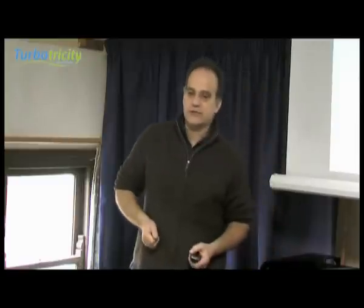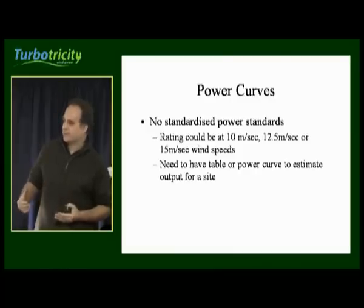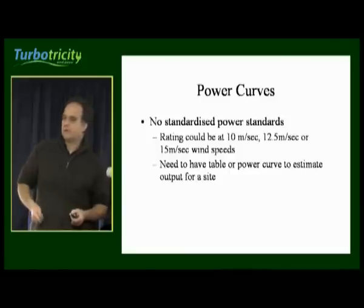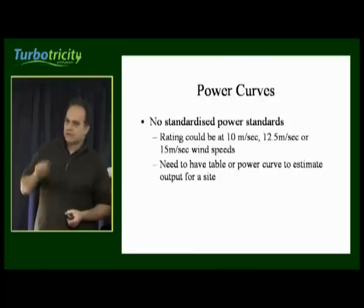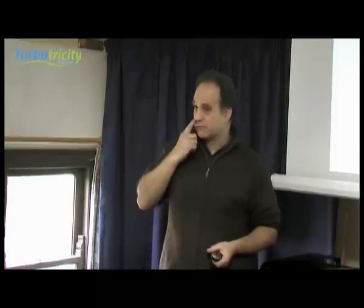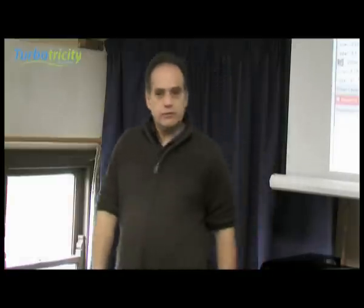Unfortunately, there's no standardisation around the wind speed at which people describe a turbine. So when somebody says this is a 5-kilowatt turbine, you need to know at what wind speed it's producing 5 kilowatts, and whether that's what the generator is producing or what you're getting out of the inverter. I would ask for the raw data to back that up.